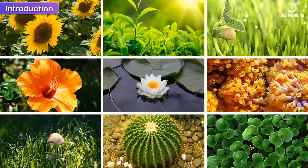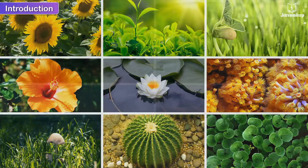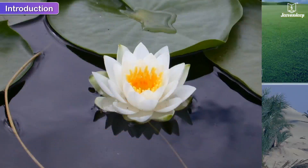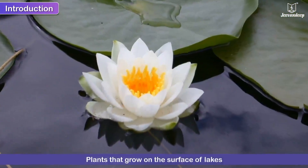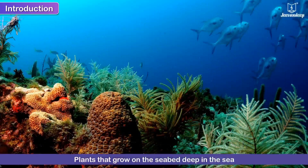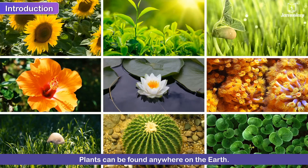Our environment is full of wonderful plants growing in different places — mountains and hills, grasslands and plains, even deserts. Did you know that there are some plants that grow on the surface of lakes while some others grow on the seabed deep in the sea? In other words, plants can be found anywhere on the earth.